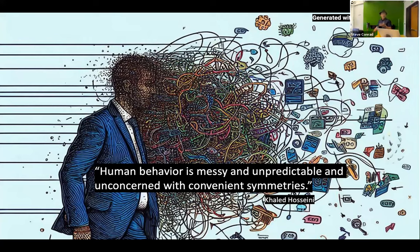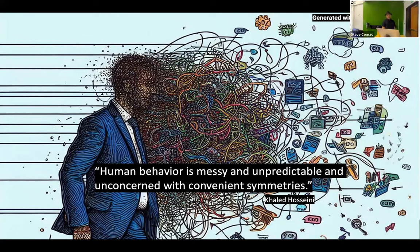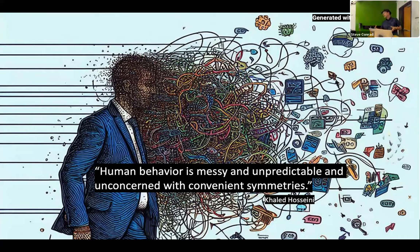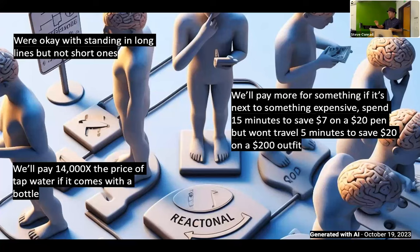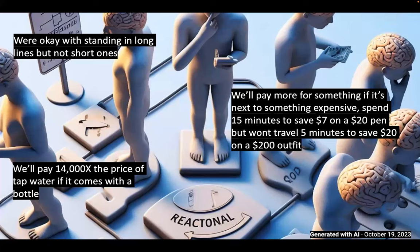I generated this graphic with AI to demonstrate what's going on in people's minds — different connections and almost random elements of thoughts and behavior. It's messy when we take the hard sciences we're trained in and try to understand human behavior. Humans do irrational things all the time.